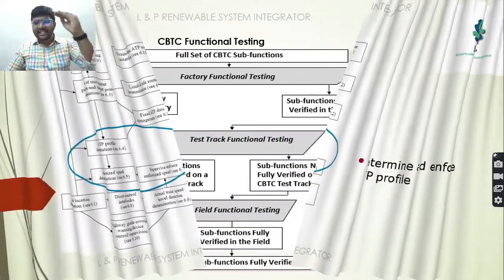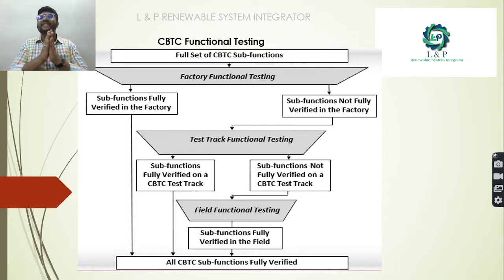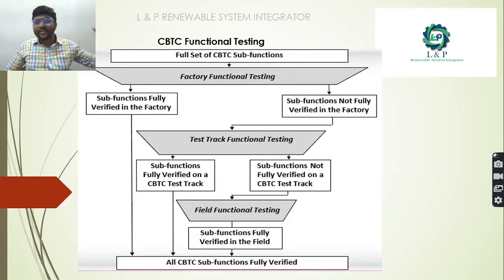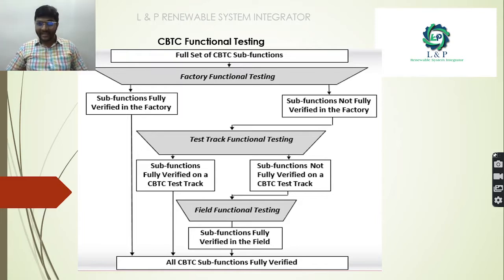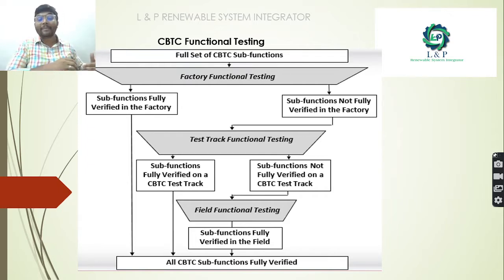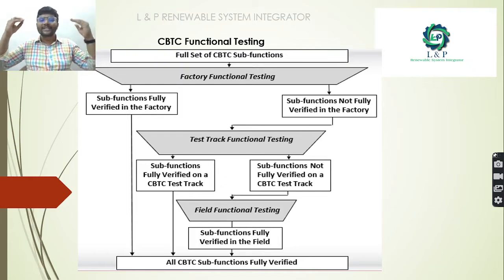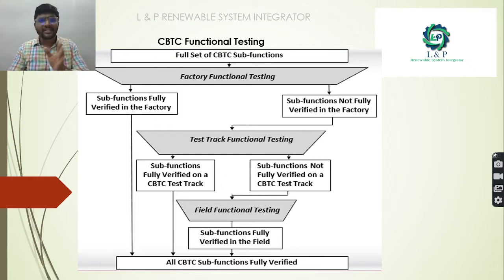For the CBTC functional test, it starts with a full set of CBTC sub-functions. First is factory functional testing where sub-functions are fully verified in the factory. If not verified there, they proceed to test-track functional testing. If all sub-functions are verified at the test track, they go directly to the field; otherwise field functional testing is done. As a result, all CBTC functions and sub-functions will be fully verified.